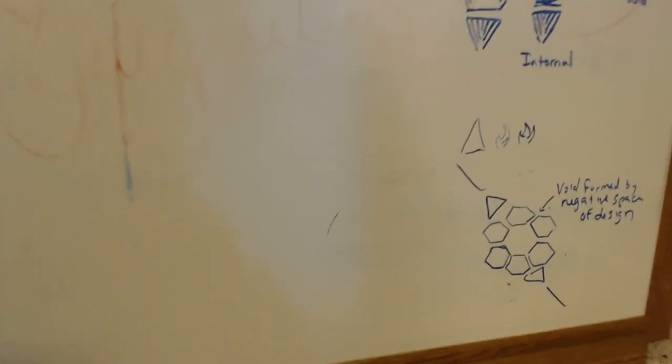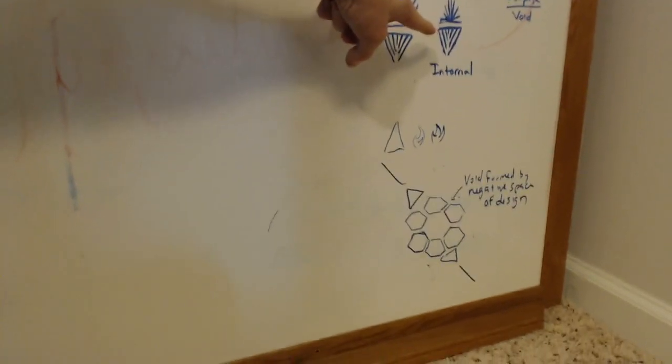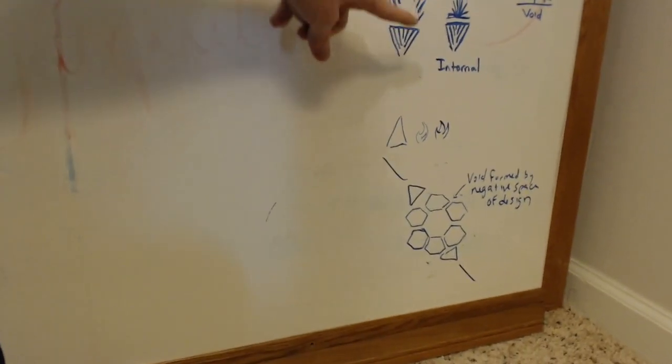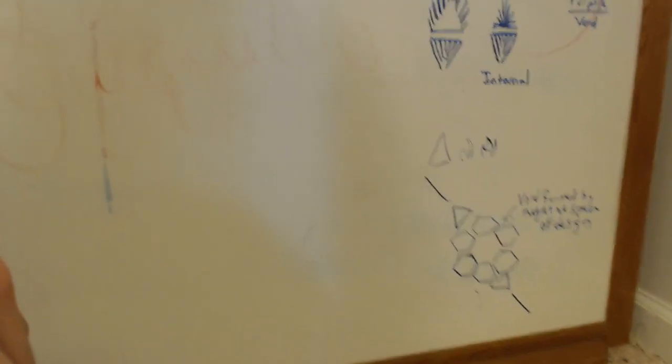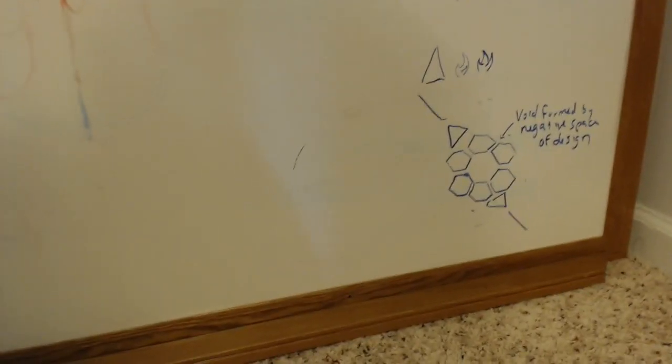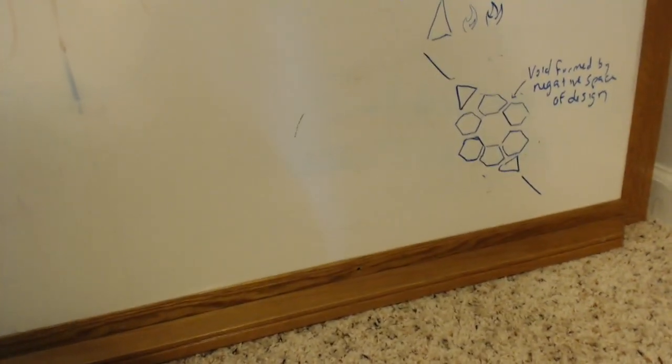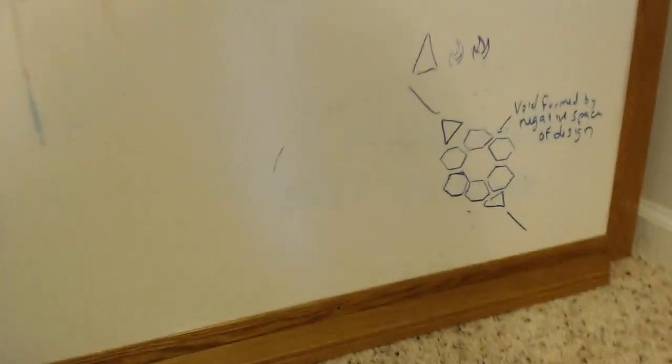And then here, what is this? He liked to doodle a lot too. So I'm not sure what this is. This looks kind of like a carrot to me, but I don't think that's what it's supposed to be. It's symbolism of something. Void formed by negative space of design. Full disclosure, he did - he was a psychonaut, if anyone knows what that is. An explorer of the mind. He did imbibe a fair amount of different substances. Some of them were legal.